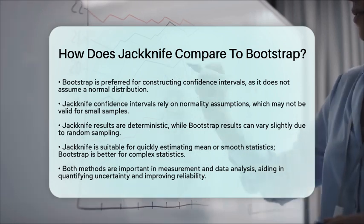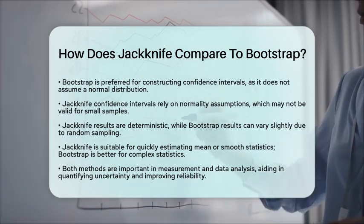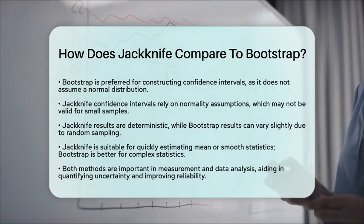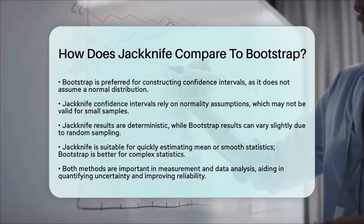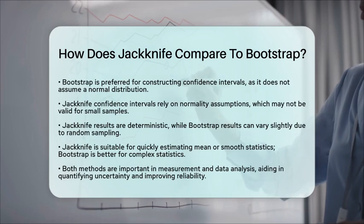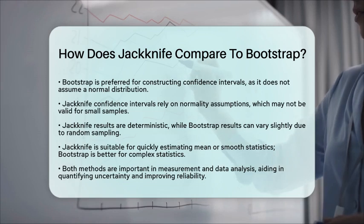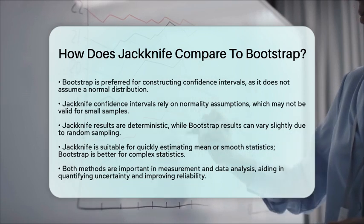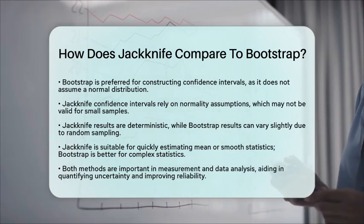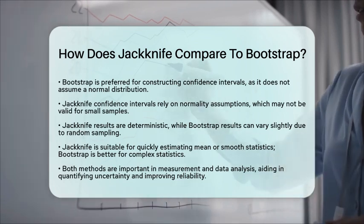In practical applications, Jackknife is great for estimating the mean or other smooth statistics quickly. When dealing with more complex statistics, Bootstrap offers a more robust approach. Both methods are essential tools in measurement and data analysis, helping to quantify uncertainty and improve the reliability of statistical estimates. Whether you choose Jackknife or Bootstrap depends on your specific needs and the type of statistics you are working with.